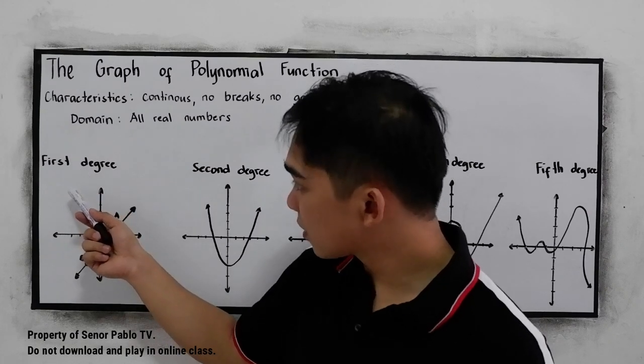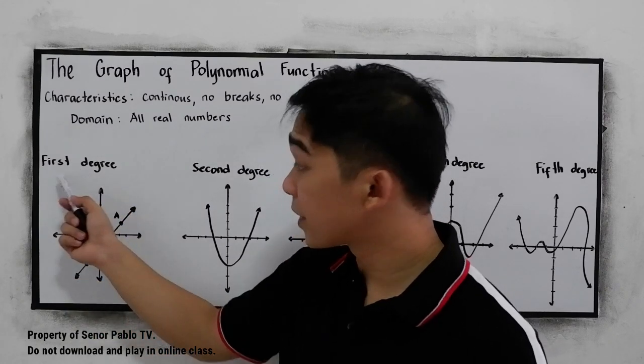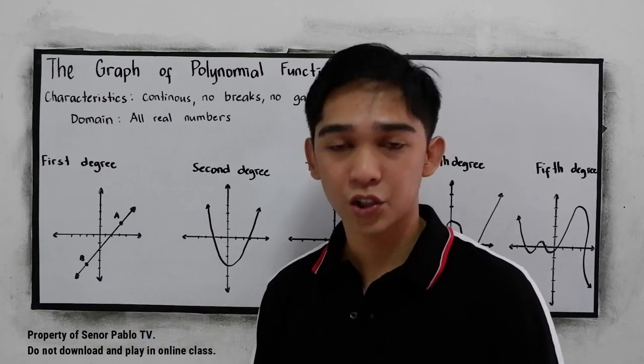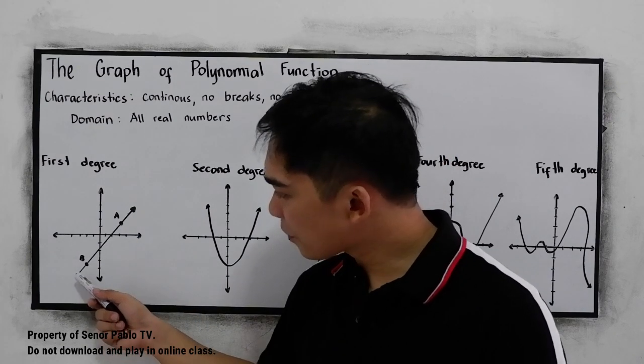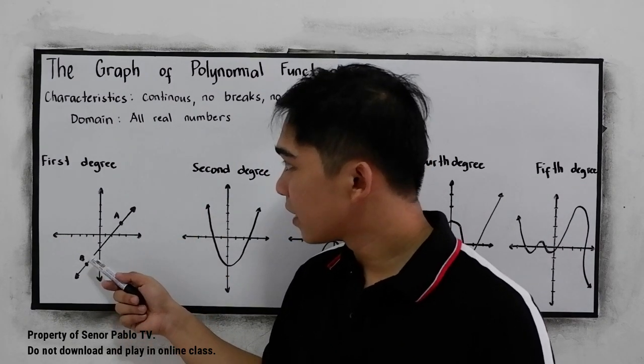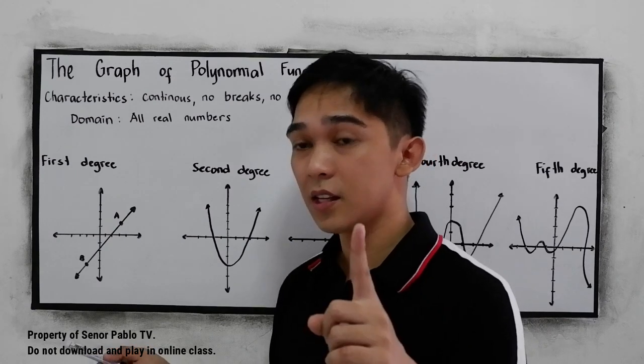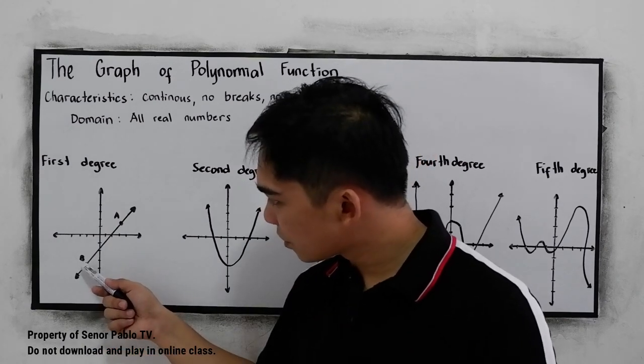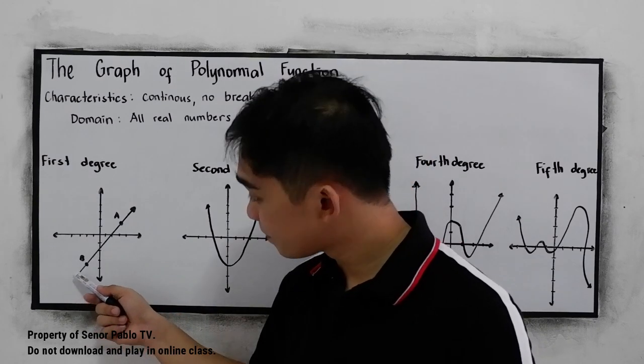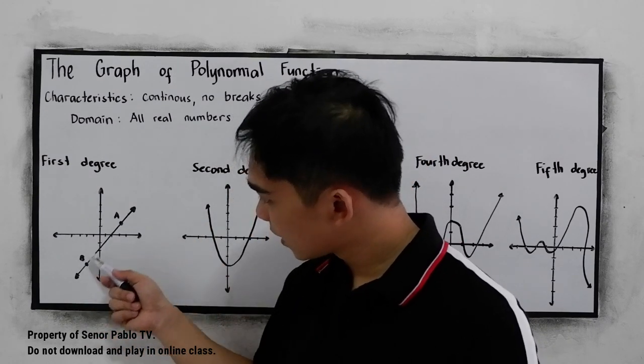Let's first look at our first degree, or the linear function. Linear function you discuss in your grade 7 and grade 8. The highest degree is 1, and our graph is a straight line. It is continuous.